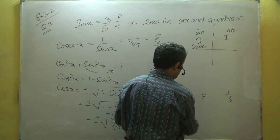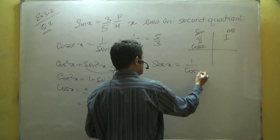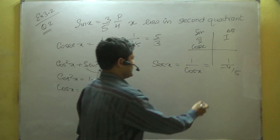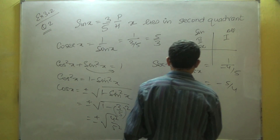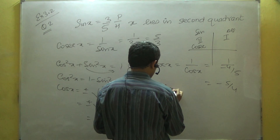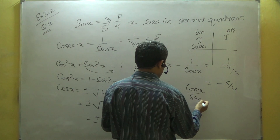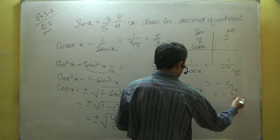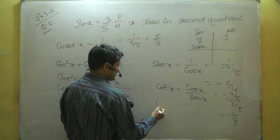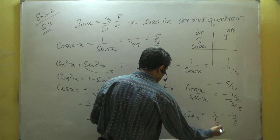Now that I have cos, its reciprocal gives sec: sec equals 1 over cos x, which is 1 over (minus 4 over 5), giving minus 5 over 4. Cosec was already found. For cot, which is cos over sin: (minus 4 over 5) divided by (3 over 5); the 5s cancel, giving minus 4 over 3. Tan is 1 over cot, which is minus 3 over 4. That is the answer.